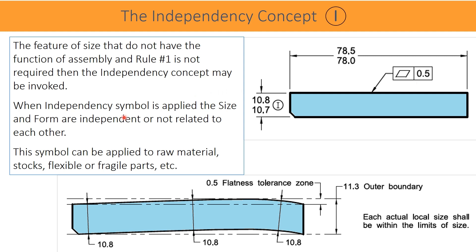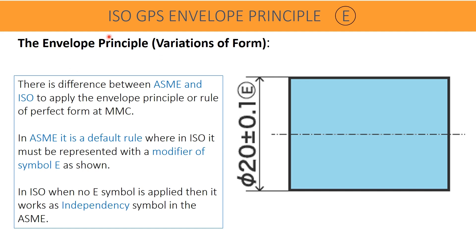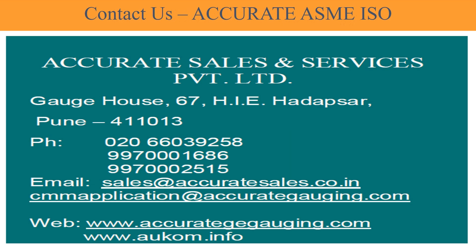The Envelope Principle in the ISO GPS system: there is a difference between ASME and ISO in applying the envelope principle or rule of perfect form at MMC. In ASME it is a default rule, whereas in ISO it must be represented with a modifier symbol 'E' as shown in the drawing. In ISO, when no 'E' symbol is applied, it works as an independency principle, similar to ASME's independency symbol. Hope you liked this video — please do not forget to subscribe to the channel and share it with others. For training inquiries, please find the contact details on the slide. Thank you, friends — take care, bye for now, see you soon in the next video.